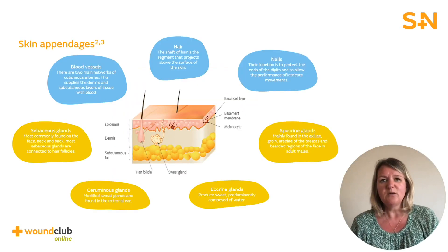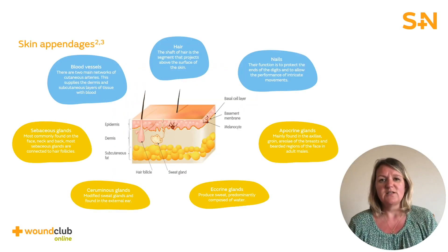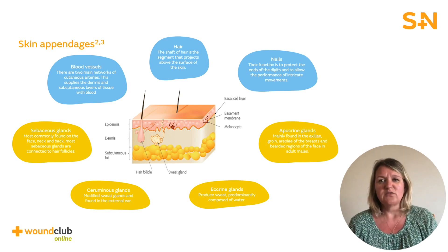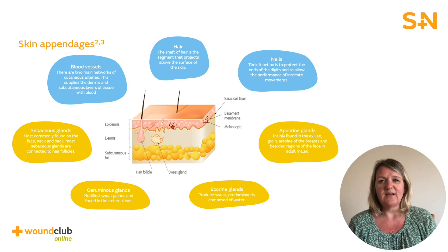The skin has a number of different appendages, firstly blood vessels. There are two main networks of cutaneous arteries. The deep plexus is a network of blood vessels situated where the dermis and the subcutaneous fat layer join, and this network supplies the dermis and subcutaneous layers of tissue with blood.